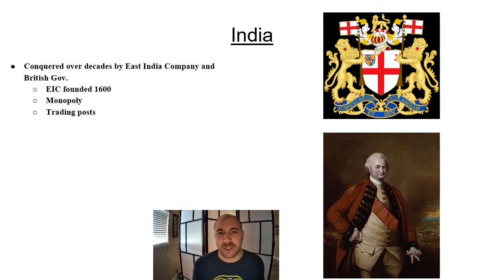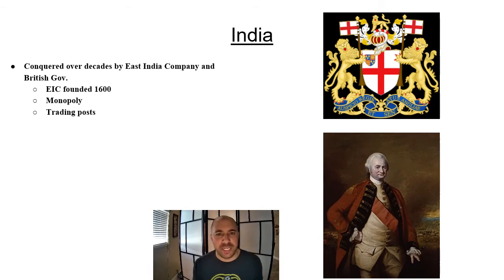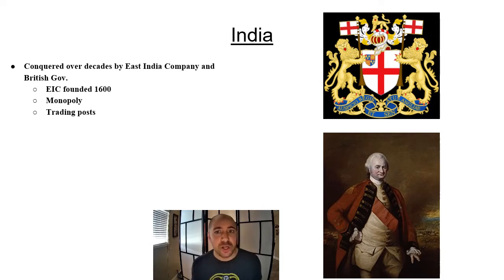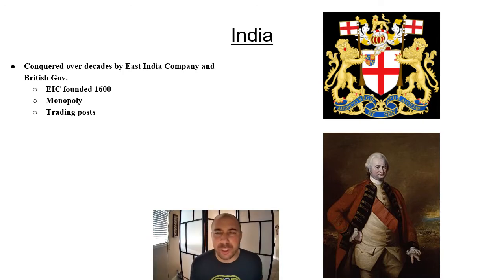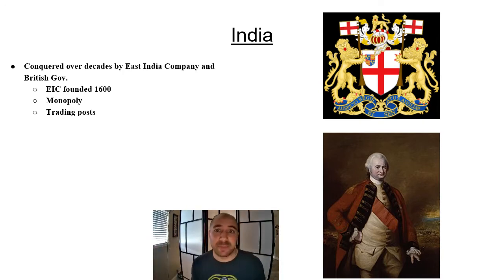Like other European countries in the 16th and 17th centuries, the British EIC gained a foothold in India when granted permission by the Mughal Emperor to establish fortified trading posts and warehouses along the coast — to store trade goods and wait for ships. This was very similar to the empires constructed by the Portuguese in the region around the same time.